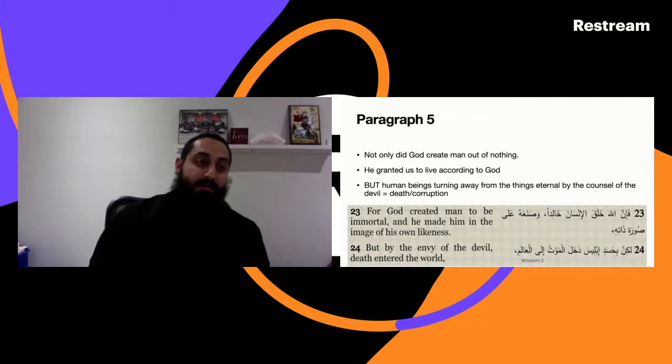The source of all existence is God. Now to be unhinged from God, unlinked to God, is simply to be non-existent. Paragraph five: not only did God create man out of nothing, but He granted us to live according to God. But human beings, turning away from the things eternal by the counsel of the devil, now this led to death and corruption.